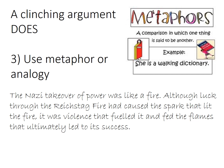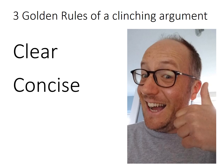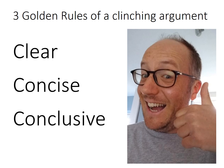Let's sum up the three golden rules of a clinching argument. Firstly, it's got to be crystal clear — if the reader can't identify your argument, that's a problem. Secondly, it's got to be concise — none of those examples were more than about four or five lines. Short and less is more. Thirdly, it's got to be conclusive — really judgmental and not sitting on the fence. Do that brilliantly and you're going to produce a clinching argument. Good luck.